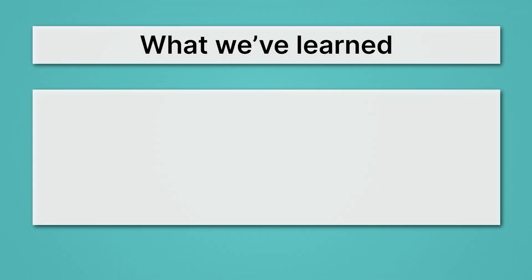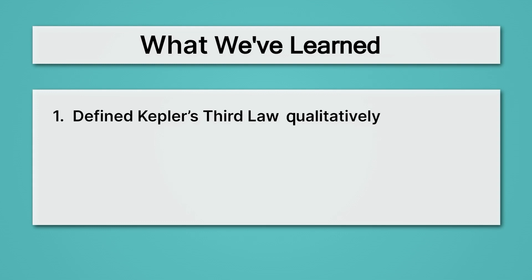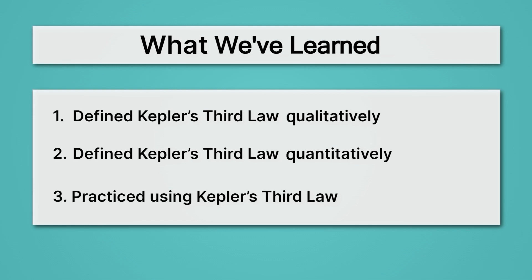Let's review what we've learned. First, we defined Kepler's third law qualitatively, where we said that as you get farther and farther away from the sun, it takes planets longer and longer to get around it. Then we defined Kepler's third law quantitatively, where we saw that the orbital period was related to the semi-major axis of our elliptical orbit. And lastly, we practiced using Kepler's law twice.